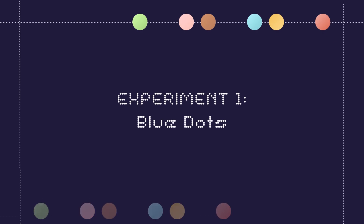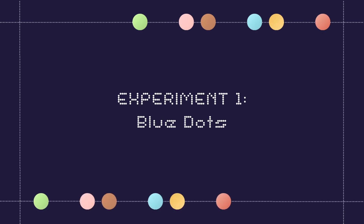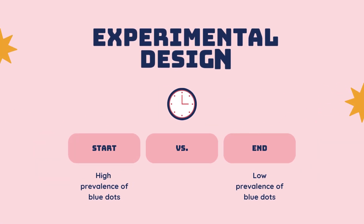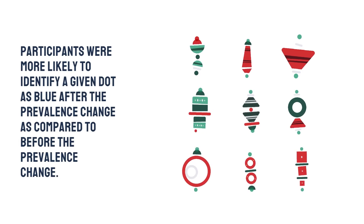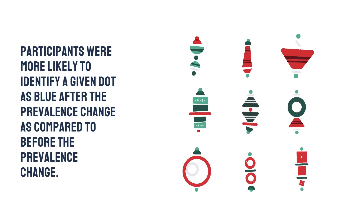In the first experiment, the researchers presented participants with a sequence of dots, each with a different level of blueness, and instructed them to identify whether each dot was blue. For the first few dots, the researchers did not change the prevalence of blue dots. However, for the last few dots, the researchers decreased the prevalence of blue dots. The researchers reported that participants were more likely to identify a given dot as blue after the prevalence change as compared to before the prevalence change.